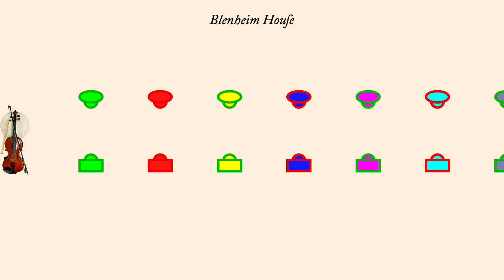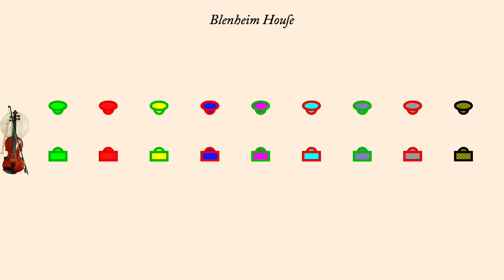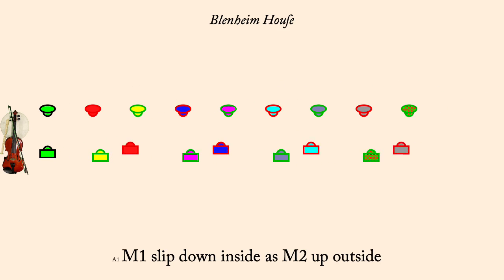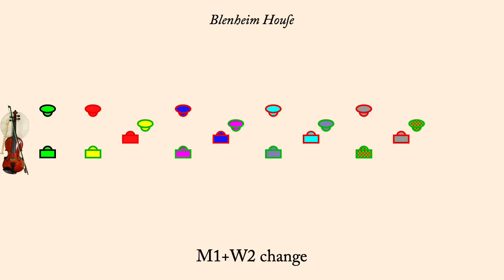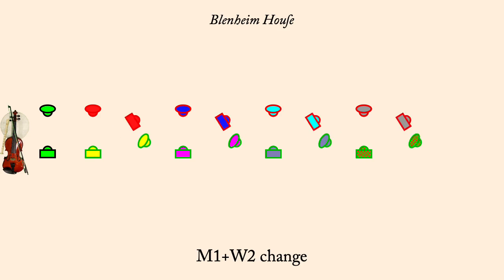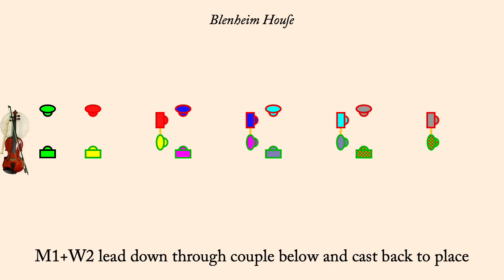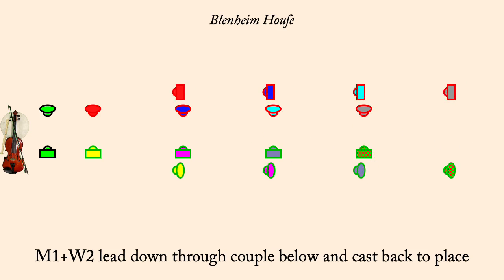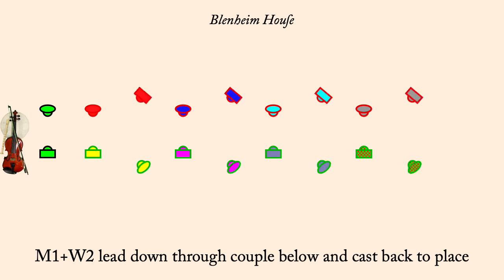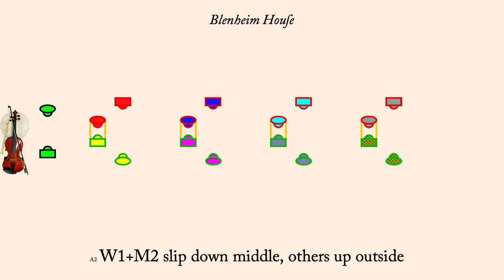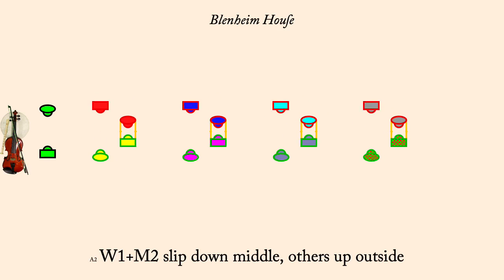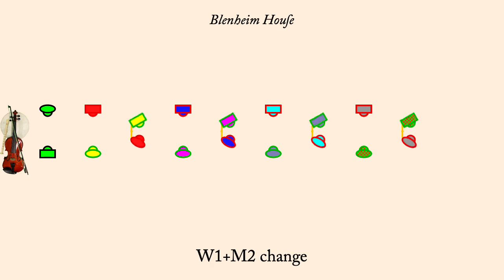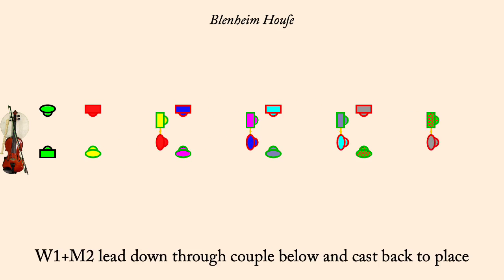Man one slip down, man two up. Man one, woman two change. They lead below next couple and cast back to place. Top couple slip down, bottom up. Woman one, man two change. They lead below next couple and cast back to place.